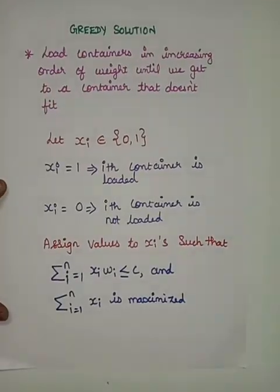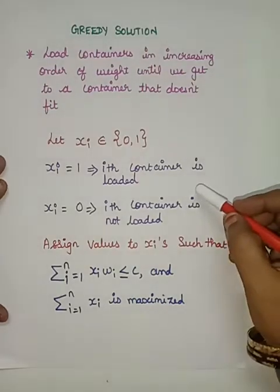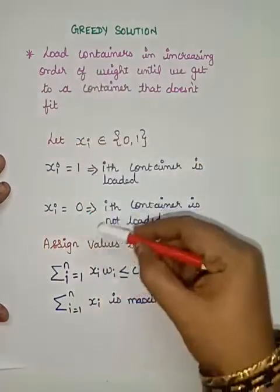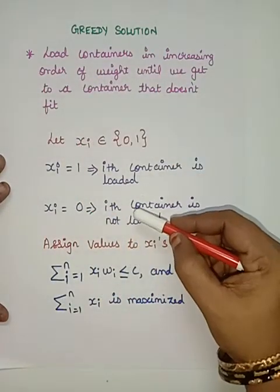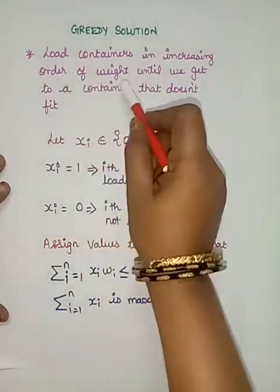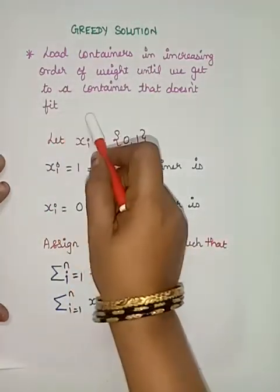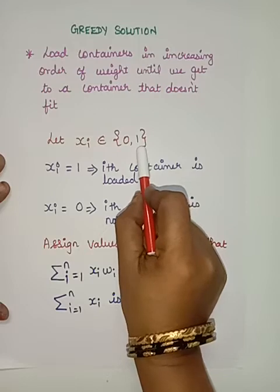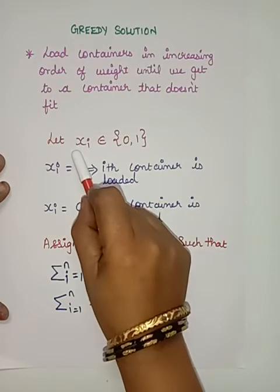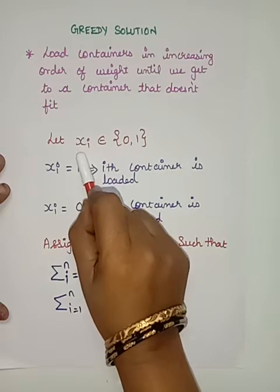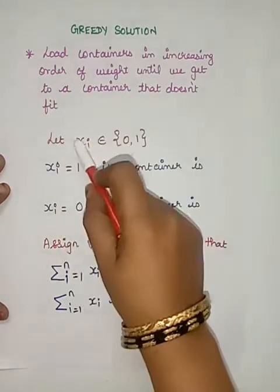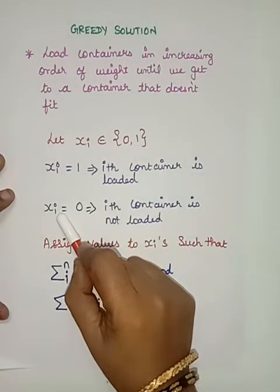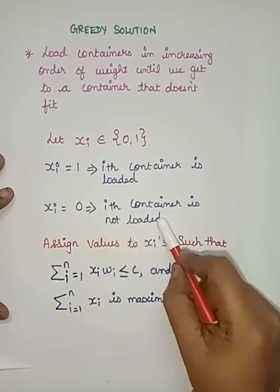This is the greedy solution for the problem. Load the containers in increasing order of weight — starting from the least weight, loading containers into the ship until we reach a container that does not fit. Xi belongs to {0, 1}: if the container gets loaded into the ship, it is marked as 1, and Xi is marked as 0 when the container is not loaded.